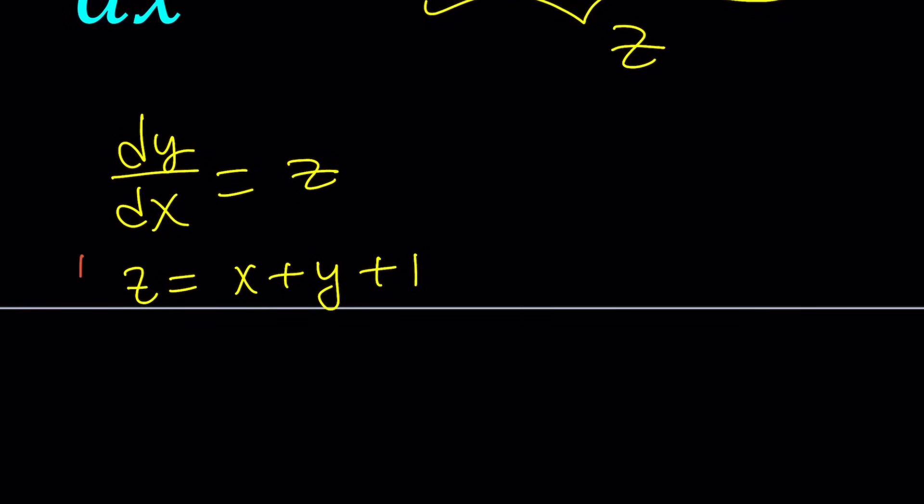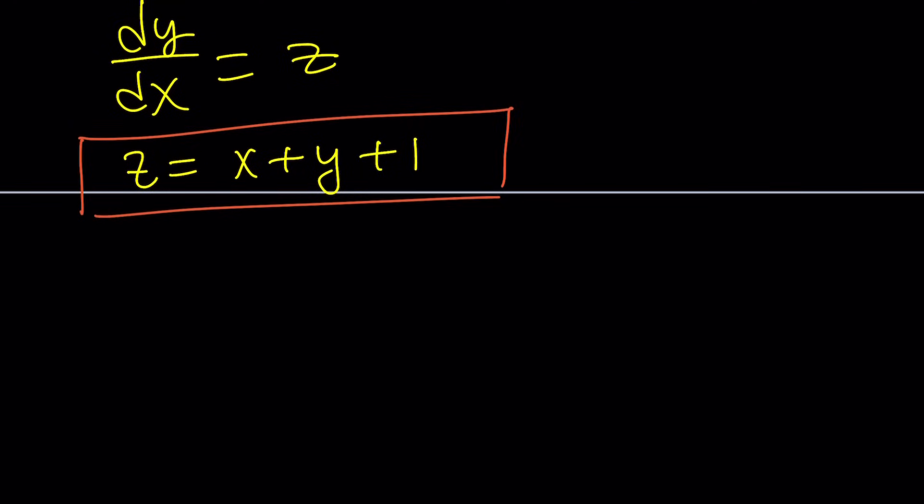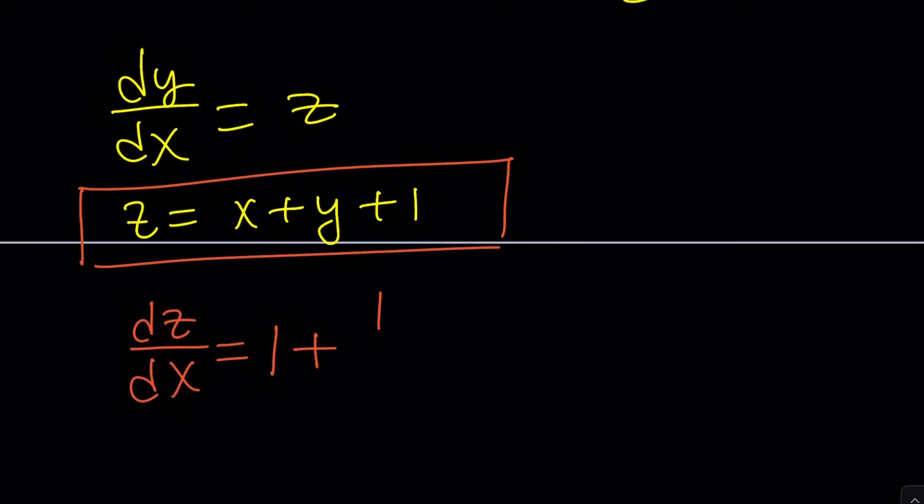And now we're going to go ahead and differentiate both sides with respect to x. So if you differentiate z, you're going to get dz/dx. The derivative of x with respect to x is dx/dx, but you can replace it with 1 easily. So it's just 1. And then the derivative of y is dy/dx. And then the derivative of a constant is 0, so you don't have to write it.